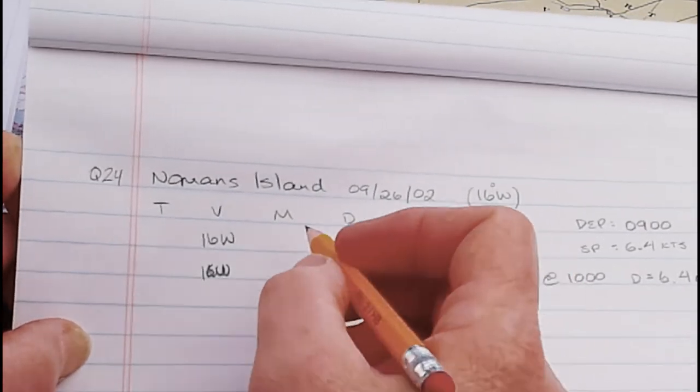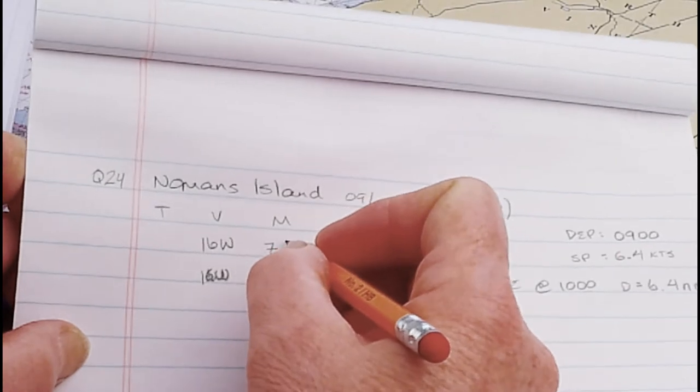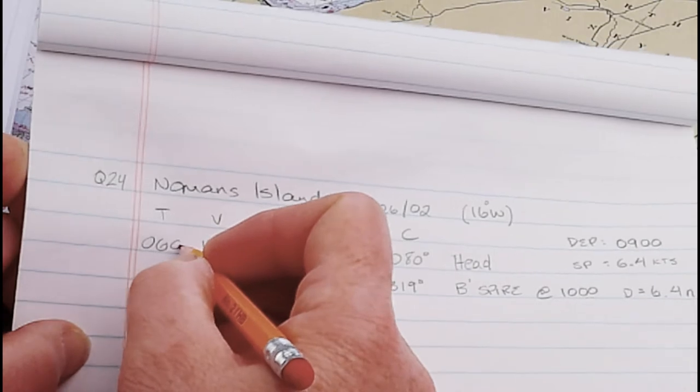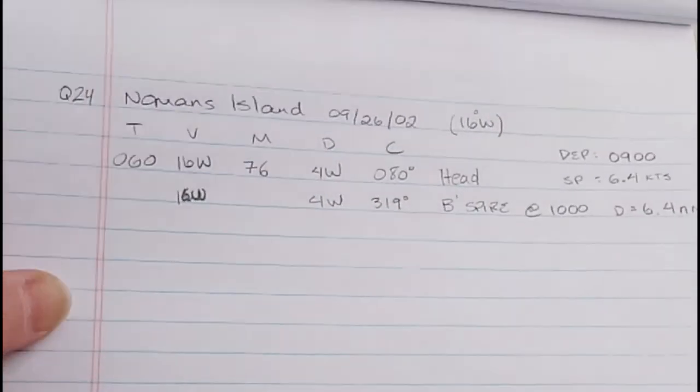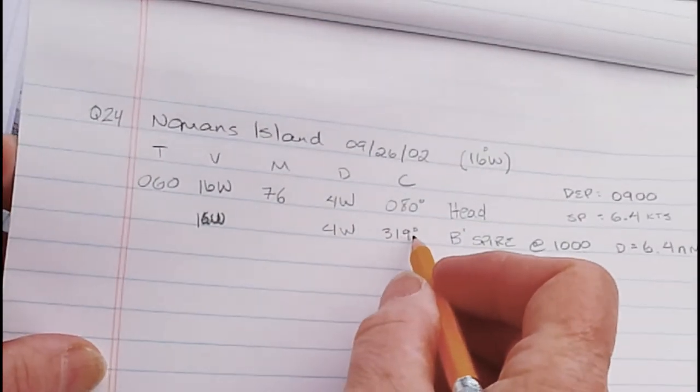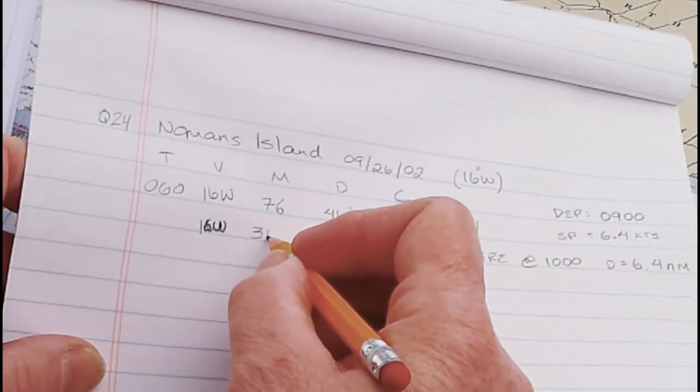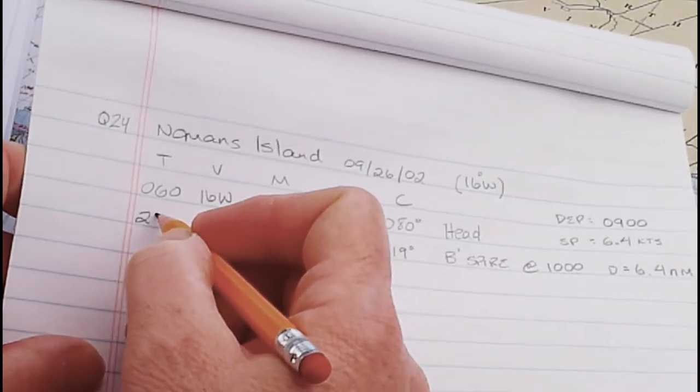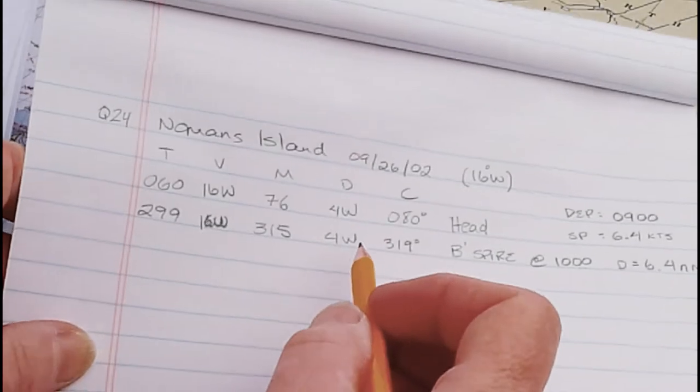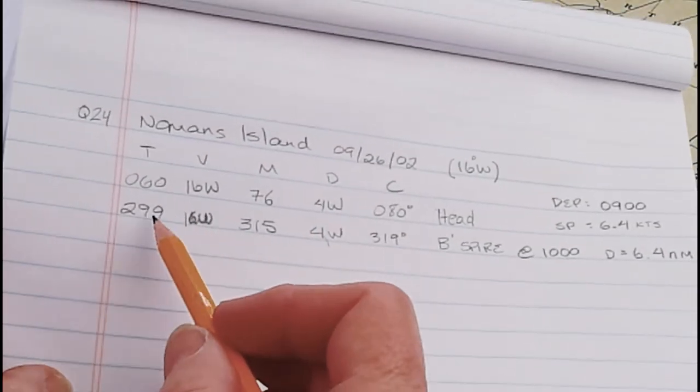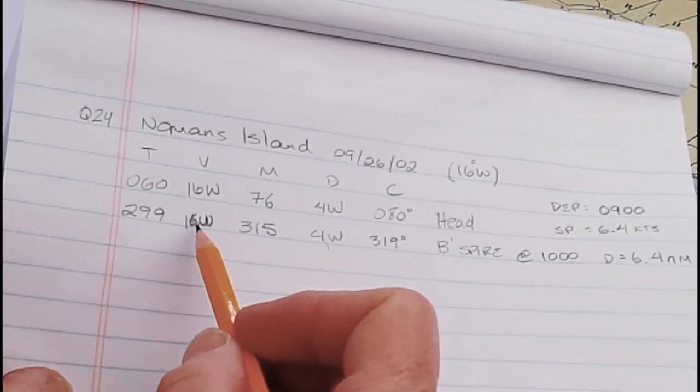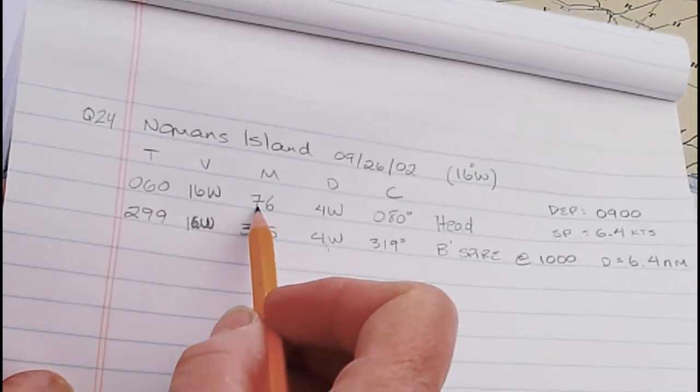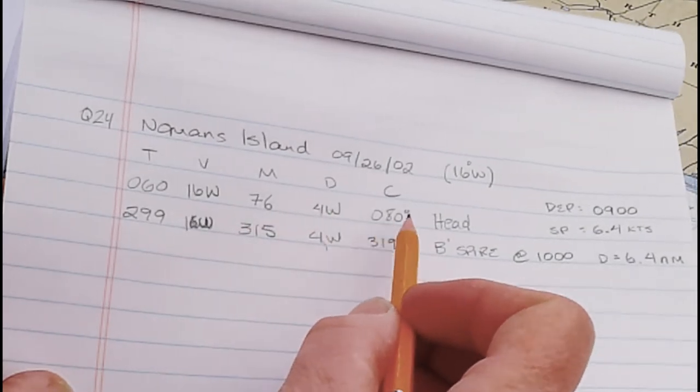So let's do 80 minus 4, 76, minus 16, 60. 319 minus 4 is 315, minus 16 is 299. Then we just check to make sure that we did that correctly by going back the other way. 299 plus 16 is 315, yes, plus 4 is 319. 60 plus 16 is 76, yes, plus 4 is 80, yes. Awesome.